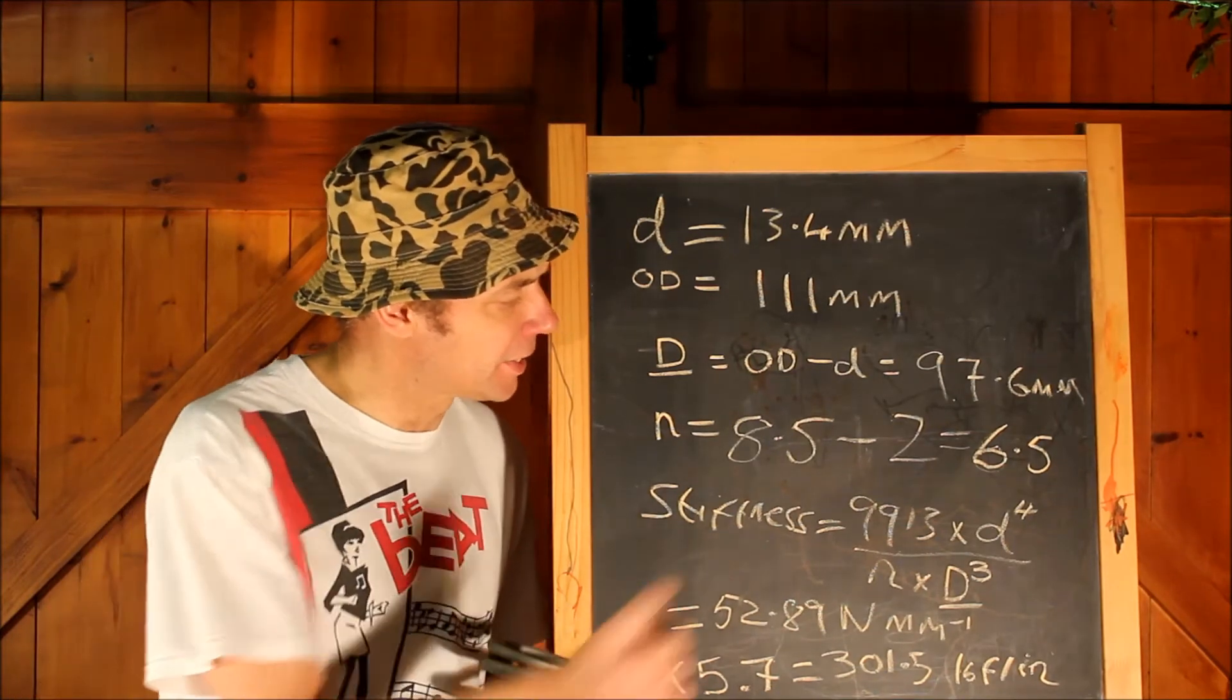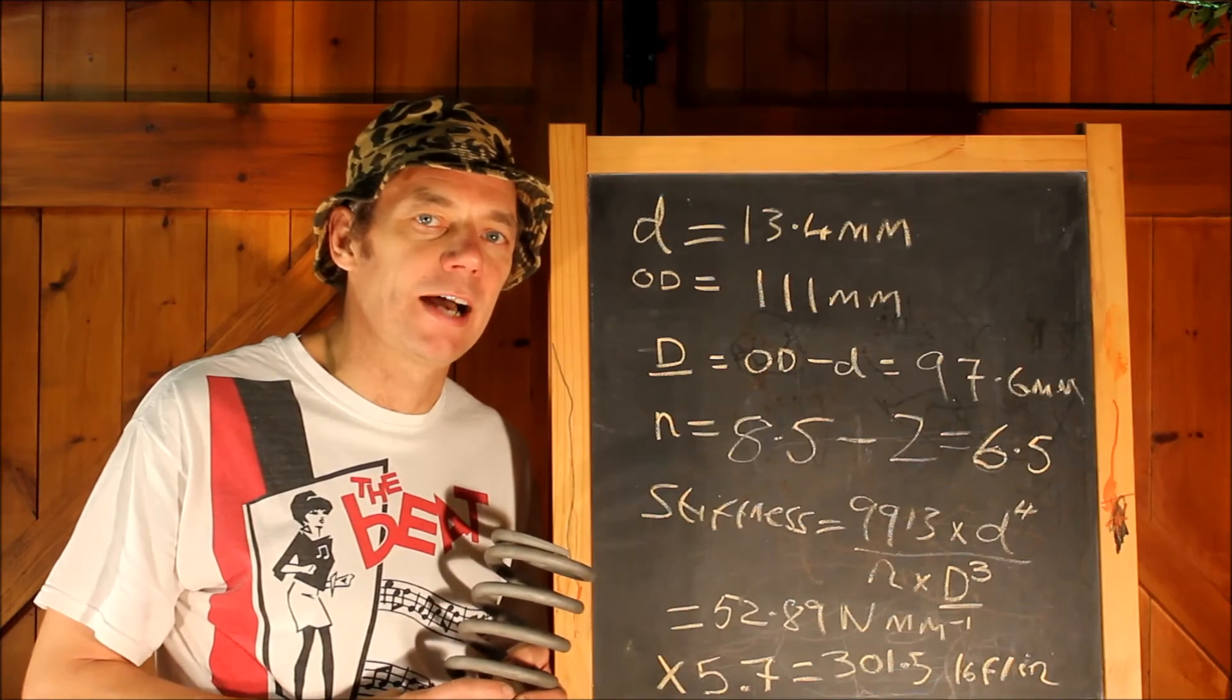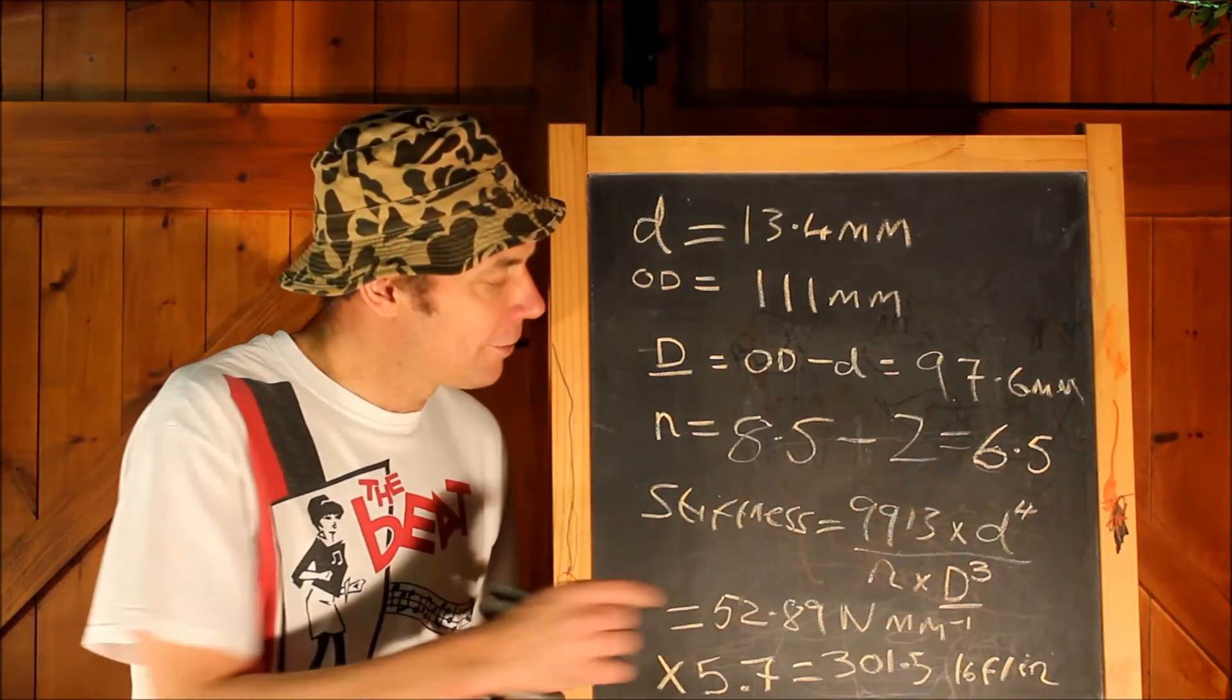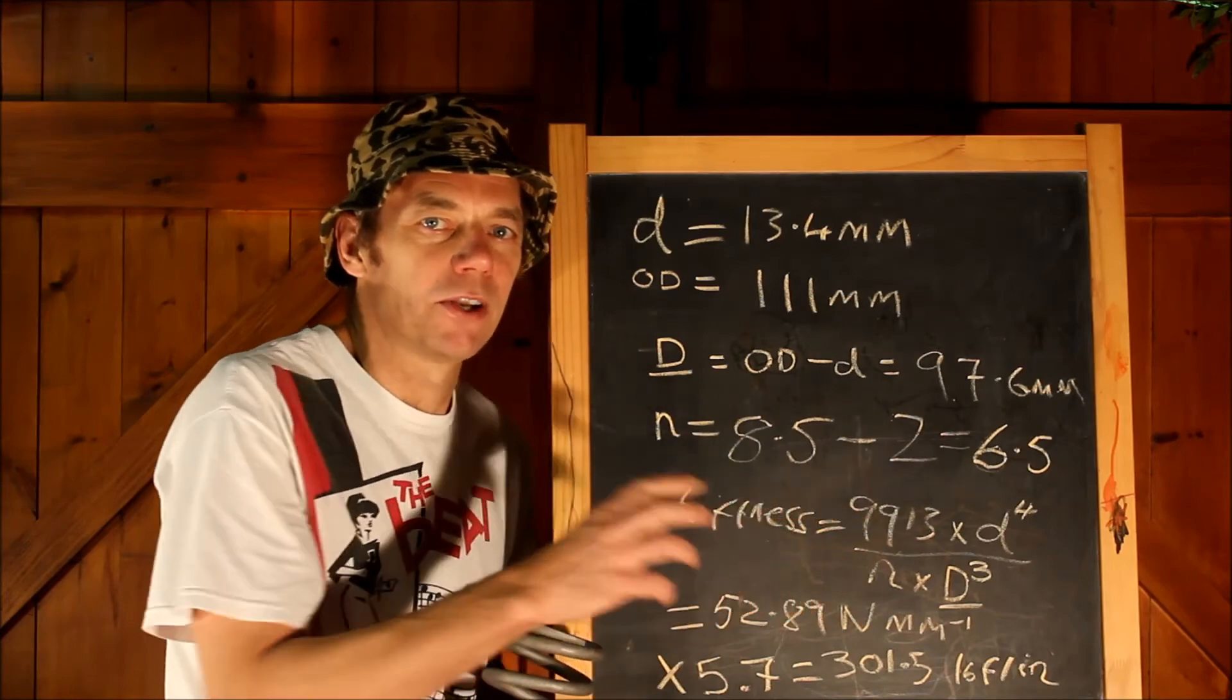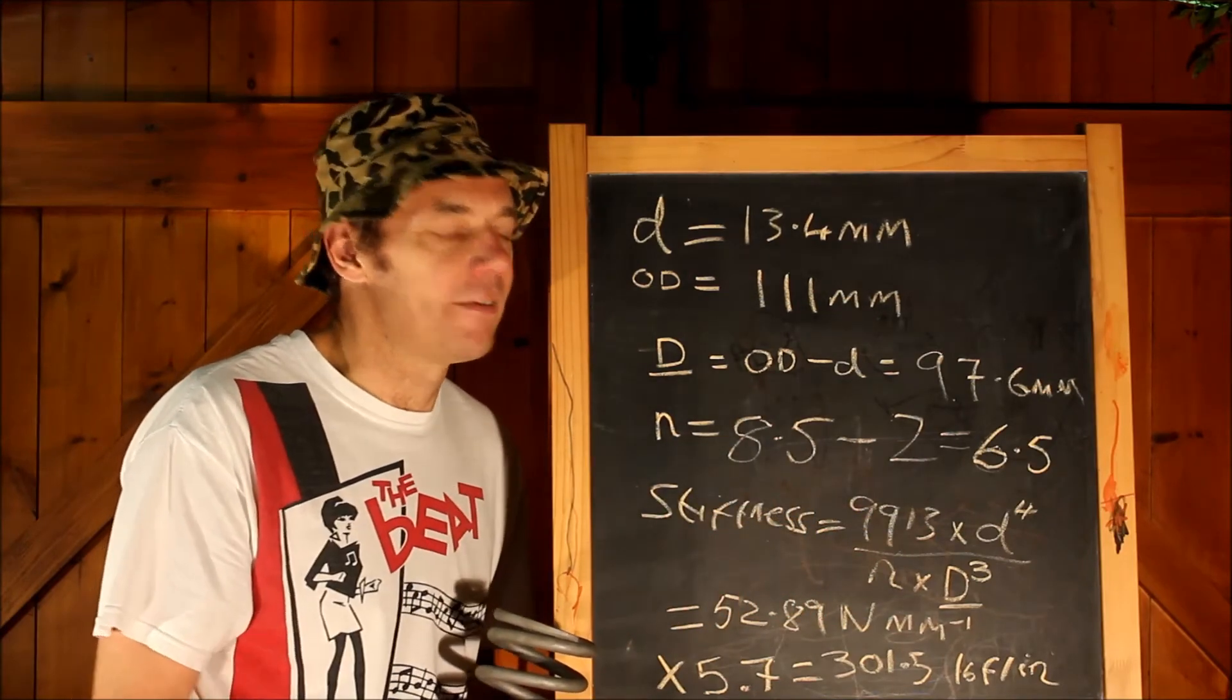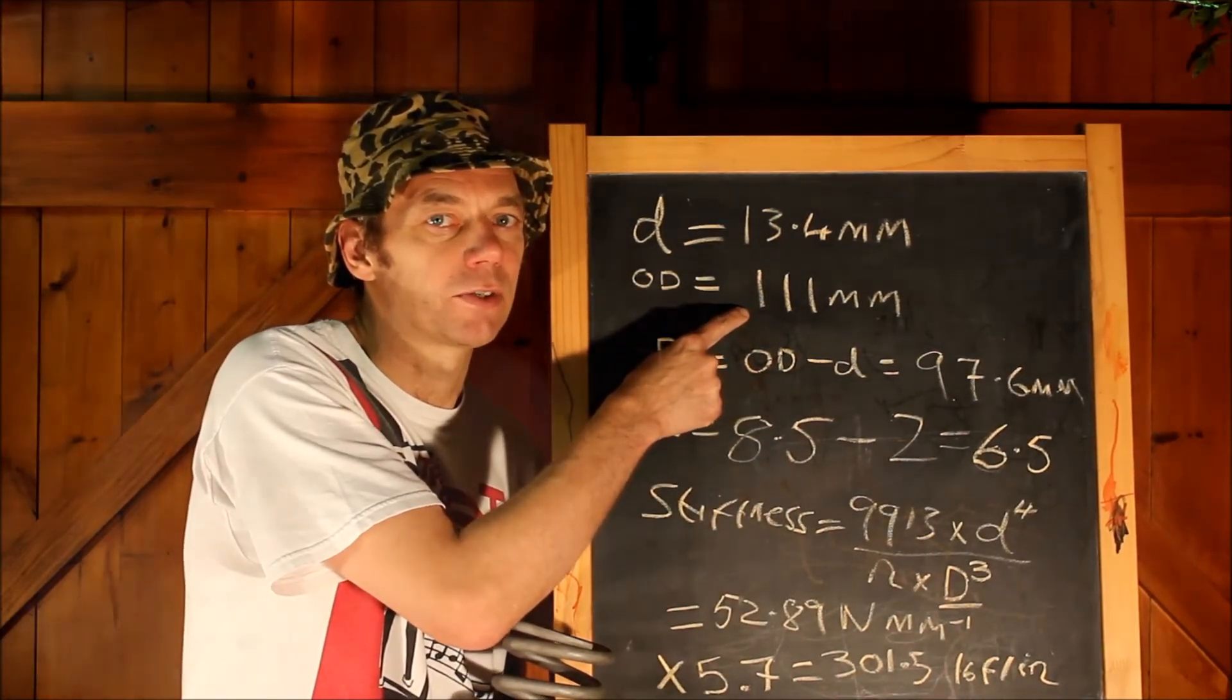Now a couple of final parting comments. This number, this constant 9913, is related to the shear modulus of the steel that your spring is made out of, and it does vary a little bit depending on exactly which type of steel your spring is made from. However, the range of values for that number is from about 9910 to about 9920, so the error you are introducing by not knowing exactly what type of steel your spring is made from is absolutely tiny. If you go wrong with these calculations, it is much more likely to be because of a slight inaccuracy in your measurements of these two values that we took right at the start.